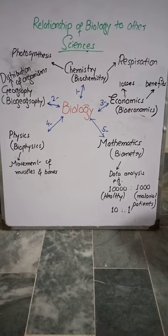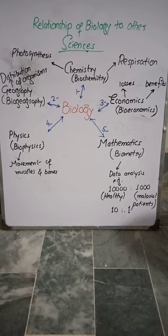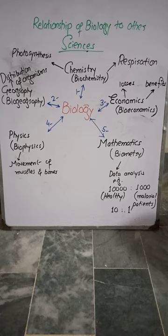Then economics. Economics is related to loss or benefit. But here we are concerned with living organisms. So, if we utilize living organisms and we get loss or benefit, that is called bioeconomics. For example, we get loss or benefit by planting crops, or from animals in the form of milk or meat.